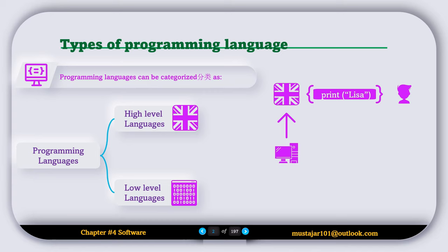Humans find it easier to write code in high-level languages because they are simpler and more like regular human languages, making them easier to understand and use.